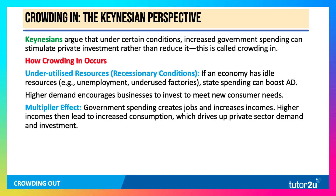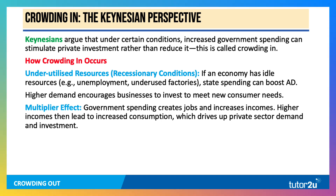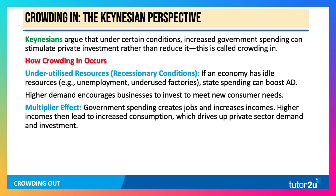It creates new jobs — one person's spending is somebody else's income. So higher incomes lead to increased consumption, which again can act as an accelerator to investment. So fiscal expansion and the multiplier effect can cause crowding in.